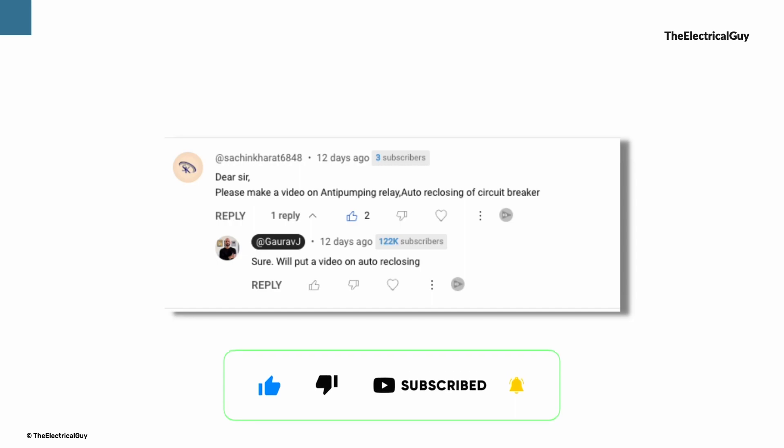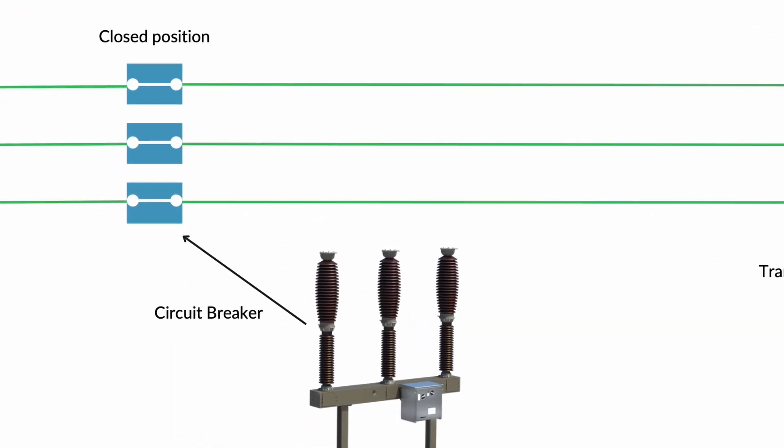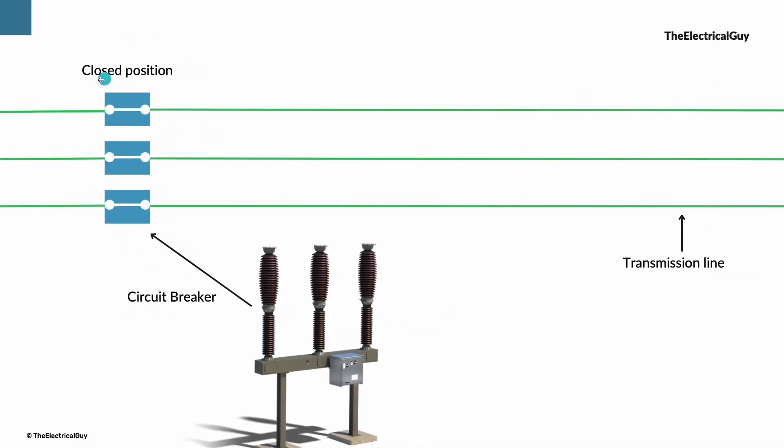Now let's talk about the reclosing. This video was actually requested by one of our subscribers. Consider this is a transmission line and this is one circuit breaker which is switching on and switching off this line. Right now the breaker is in closed position and the transmission line is delivering power.